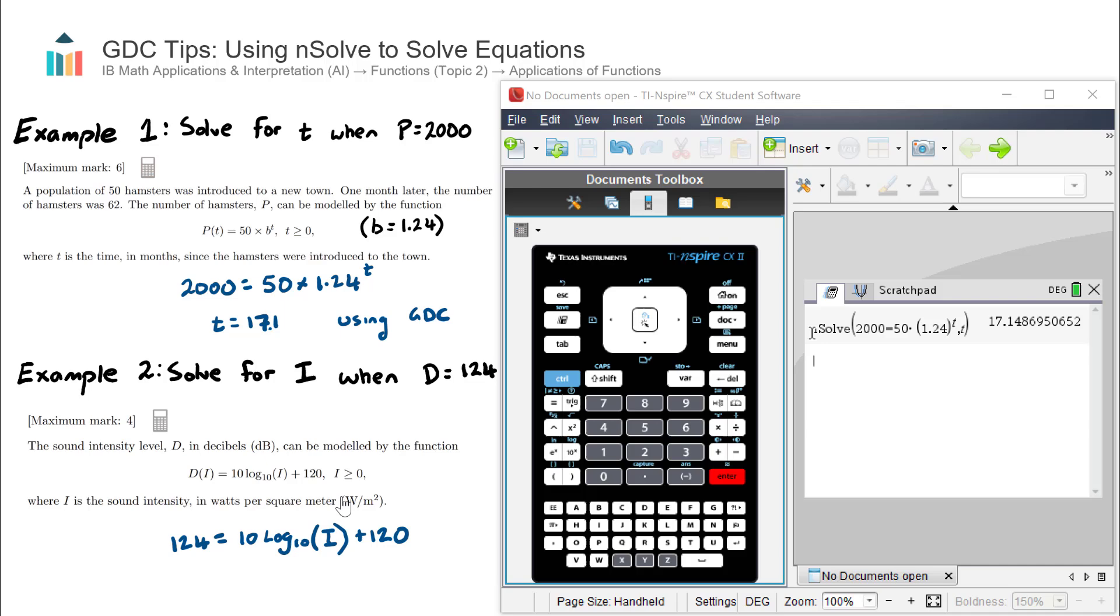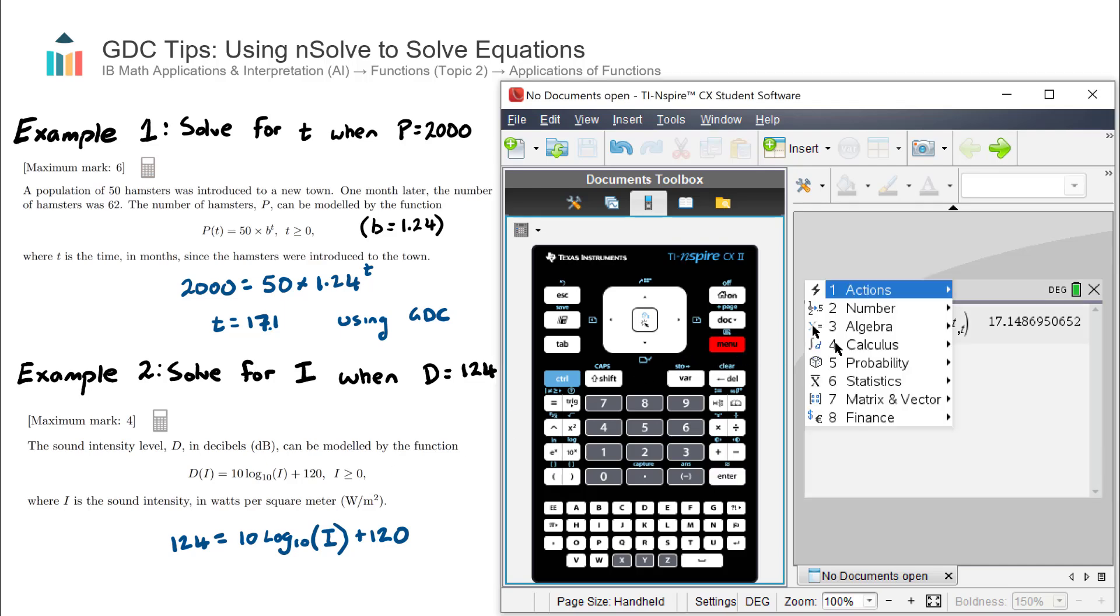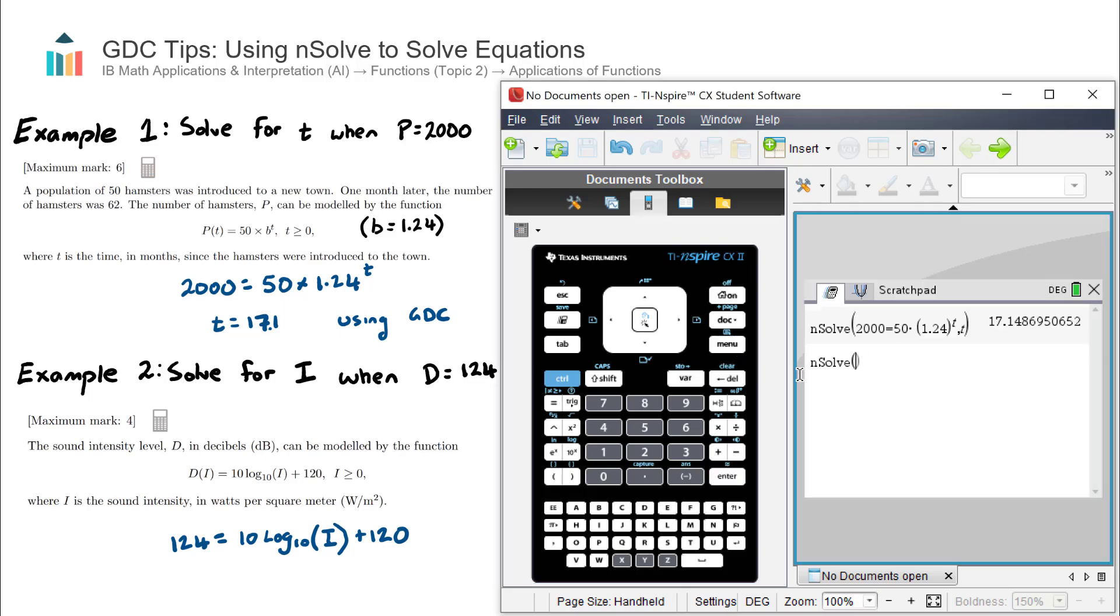We go menu number 3, algebra, number 1, numerical solve again. Let's enter this equation in directly: 124 = 10 log₁₀(I) + 120. I'm just going to put lowercase i since I can't put capital I. Again, we need to tell the calculator what to solve for, so we put comma i, hit enter, and we get an I value of 2.51.